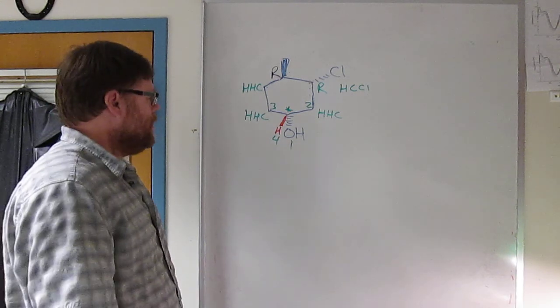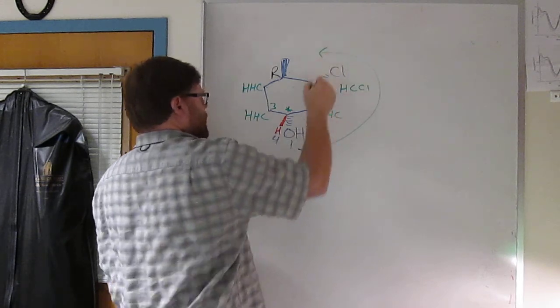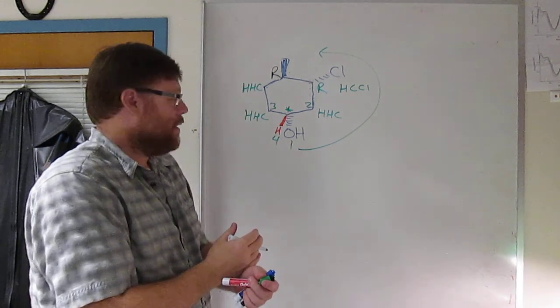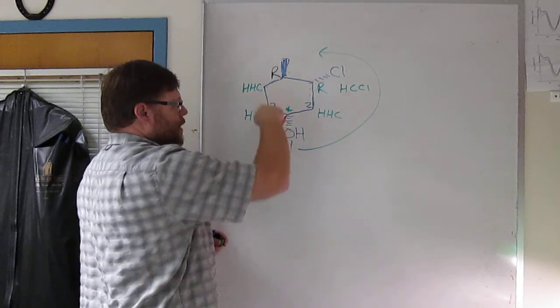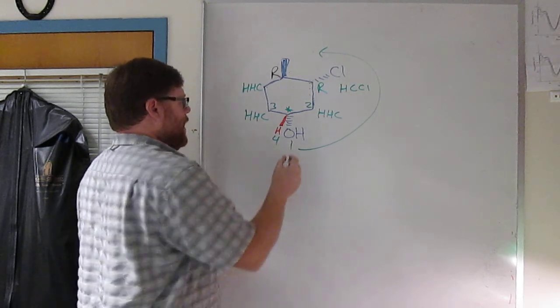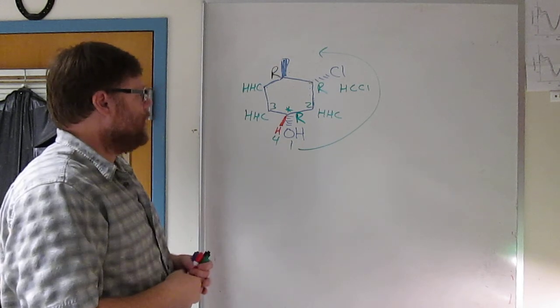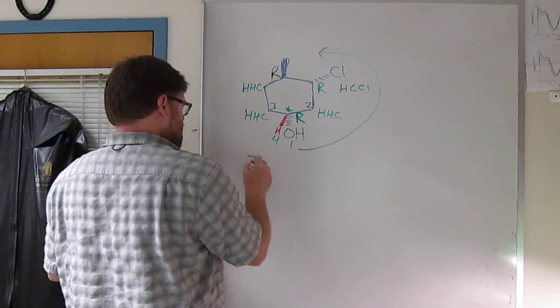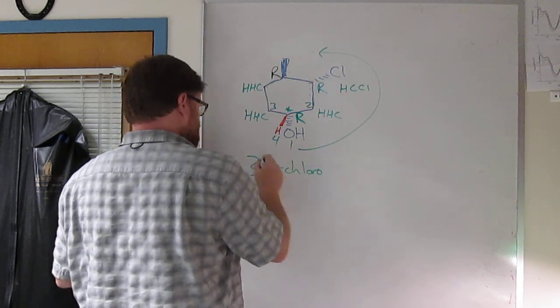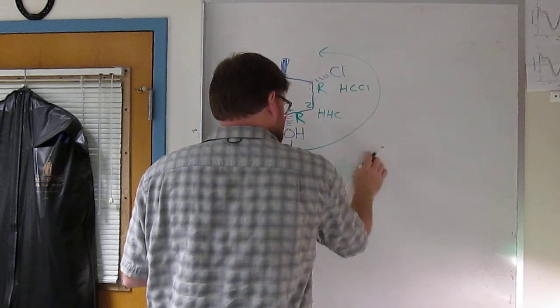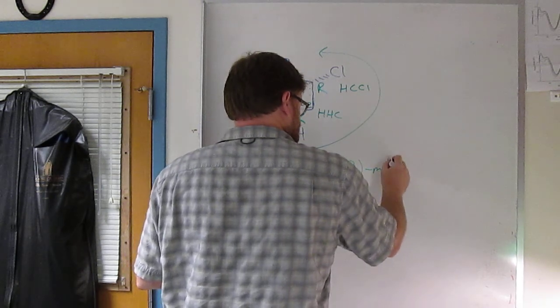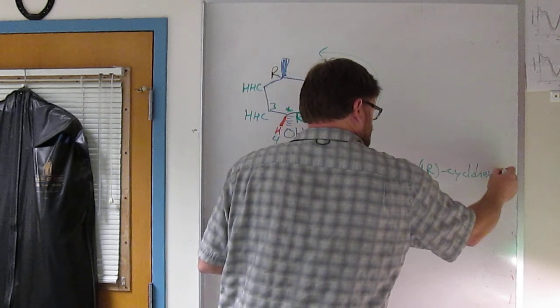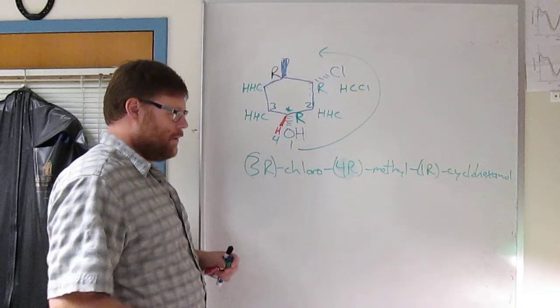You've assigned the priorities, now draw your circle. One to two to three goes counterclockwise. But once again, the low priority group is pointed at you, so that's the reverse of what Cahn-Ingold-Prelog requires. Take the reverse of what your arrow—a counterclockwise arrow would normally indicate S, but with a low priority group pointed at you it's going to indicate R. Very good, so all three are R. The proper name is 3R-chloro-4R-methyl-1R-cyclohexanol.